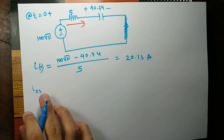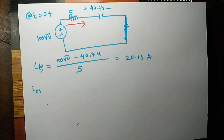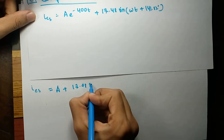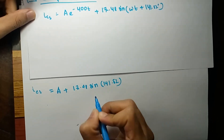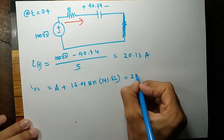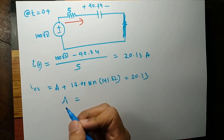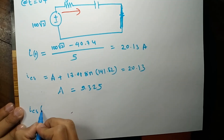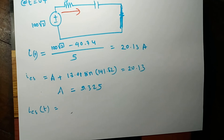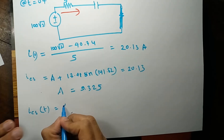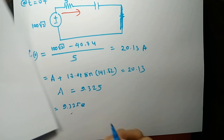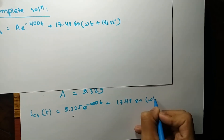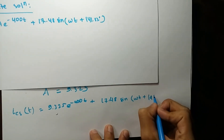We now have our initial condition. Substituting t = 0 into the complete solution: A + 70.48·sin(141.82°) = 20.13. Solving this gives A = 9.325. The final complete solution for the current as a function of time is I(t) = 9.325·e^(−400t) + 70.48·sin(ωt + 141.82°).